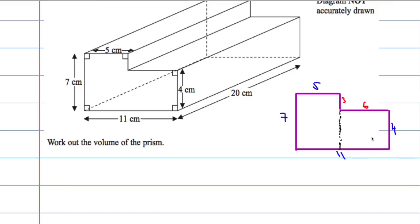So if I want the area of this rectangle here, I'm going to multiply 6, which is its length, by 4, which is its height: 6 times 4 is 24. And if I want this rectangle here, the area is going to be 5 times 7, which is 35. So the area of the cross-section will equal 35 plus 24, which is 59, and that's in centimeters squared because it's area.